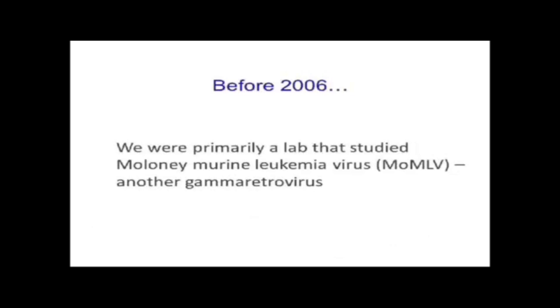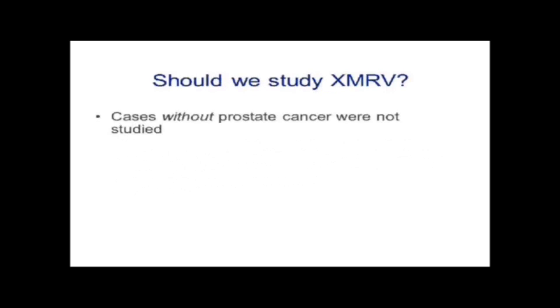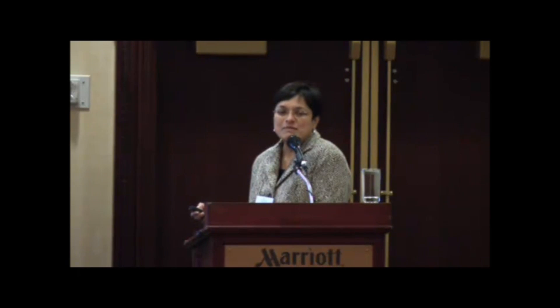At that time, we were primarily a lab that studied Moloney murine leukemia virus, another gamma retrovirus that causes leukemia in mice. We thought about whether we should be studying XMRV, and at first said no — because cases without prostate cancer were not studied. Maybe it's just a virus that likes to hang out in all prostates and has nothing to do with cancer. Picking up a virus in a particular disease doesn't mean anything if you've only studied that disease. You have to study controls as well. If I study CFS patients and find lots of E. coli, well, there's E. coli in all of us.